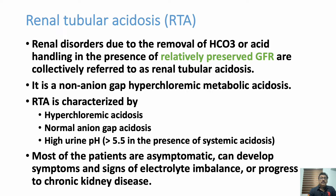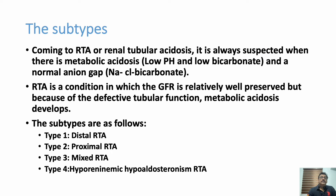Many patients are asymptomatic, but some present with electrolyte imbalance or kidney disorders. Associated diseases include SLE, Sjögren's syndrome, or drug-induced causes. On ABG, you will see a normal anion gap metabolic acidosis. There are four important subtypes of RTA.